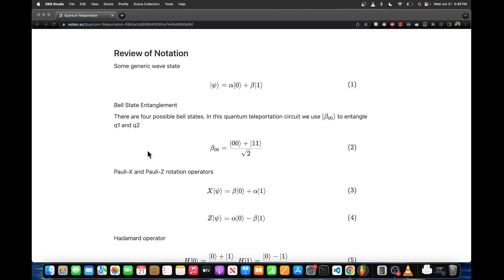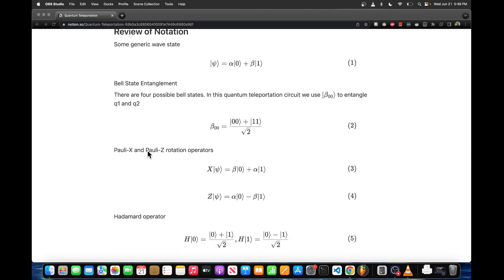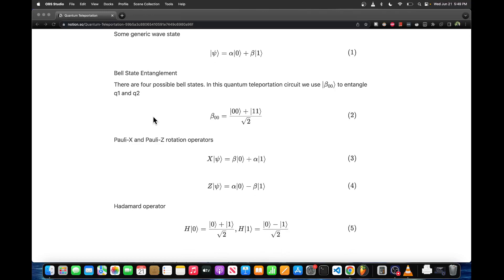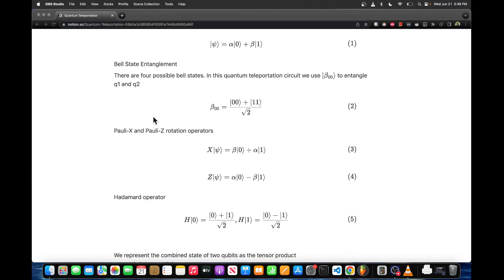The next thing we need to know is the Bell state entanglement. There are actually four Bell states. In this one we're using Bell state 00, which corresponds to two qubits which have been entangled such that they're either both in the zero state or both in the one state. If we measure one of the qubits, we automatically know what the other one is because they're entangled.